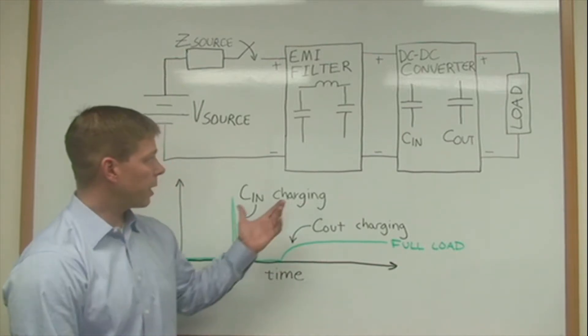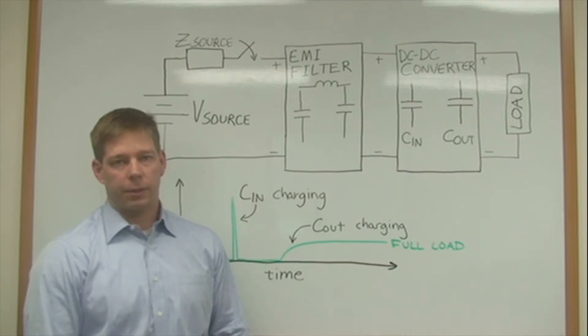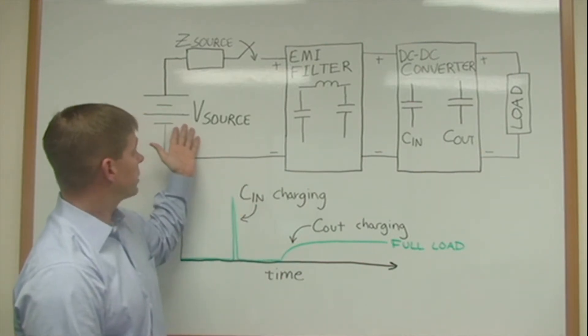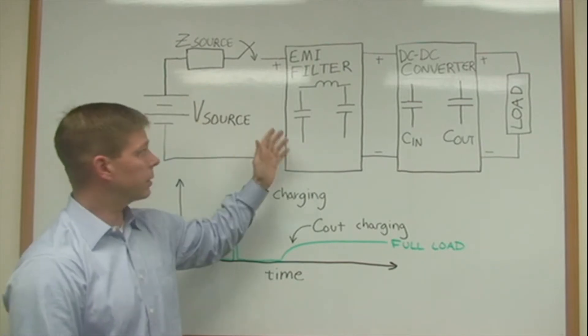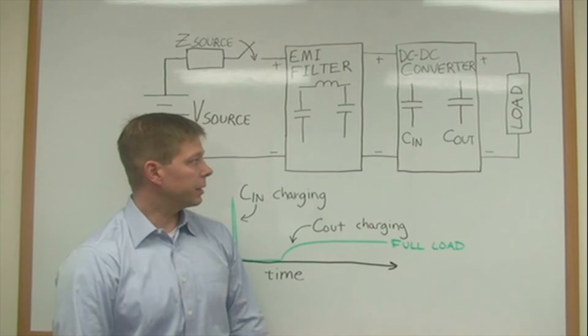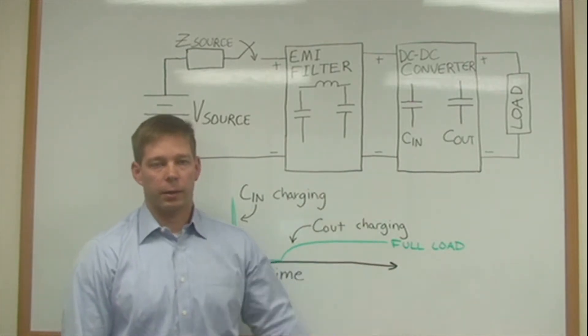On the board I have a block diagram of a typical DC to DC converter system with a source bus. It shows the source impedance and then followed by an EMI filter and a DC to DC converter supplying a load.